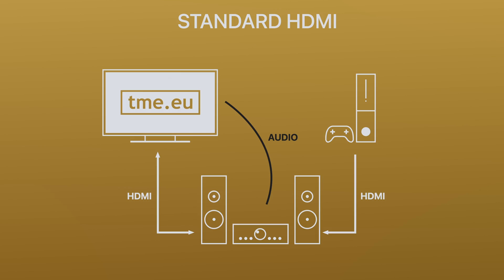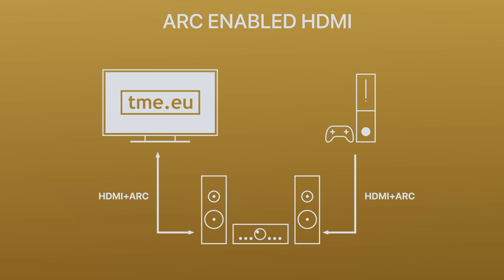The audio return channel makes sure that audio goes to one output. For example, if you have a TV and a soundbar, in the past you had to mute your TV and control the volume of the soundbar with another remote. With ARC or CEC, you are able to control every device connected to your TV with one output and no extra wires or configurations.